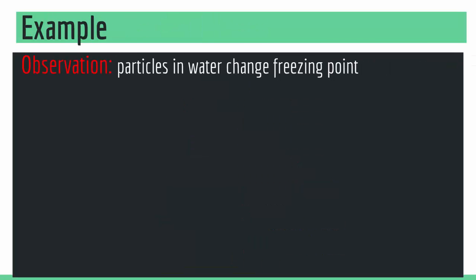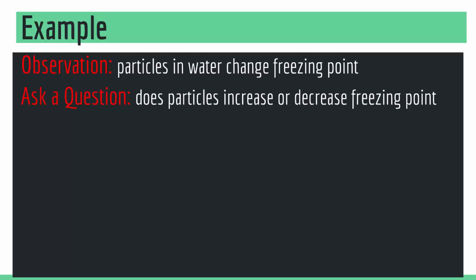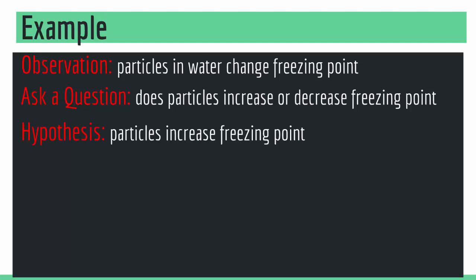Let me give you a couple of examples. Let's say we make this observation: particles in water change the freezing point. Water without any particles has a certain freezing point, and when we add particles, it changes the freezing point. Then we ask the question: do particles increase or decrease the freezing point? We had an observation, and now we ask a question about it.